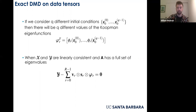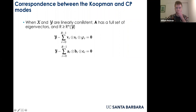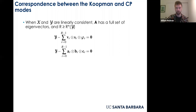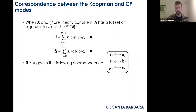With multiple initial conditions, instead of evaluating eigenfunctions at a single initial condition, we consider vectors where each element is the eigenfunction evaluated at one of the different initial conditions. If X and Y as tensors are linearly consistent — meaning each pair of frontal slices is linearly consistent — and each resulting operator A has a full set of eigenvalues, then the tensor Y minus the sum of outer products of Koopman modes, their time evolutions, and eigenfunctions equals zero.